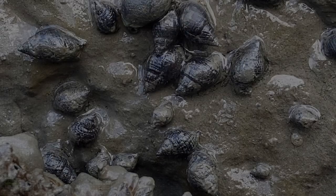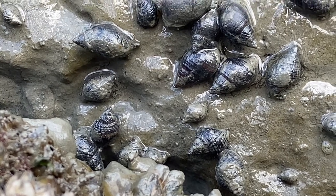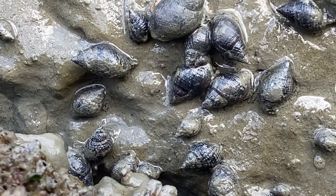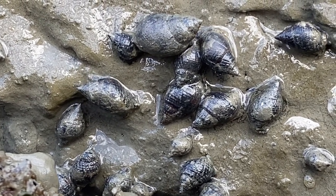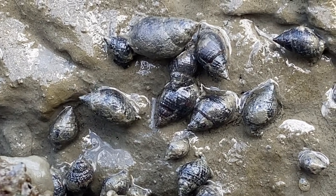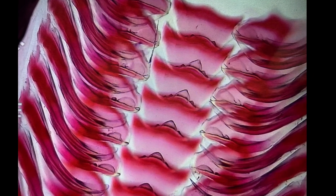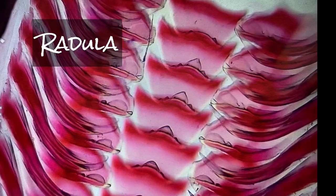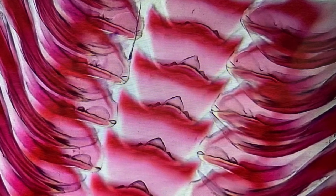Snails can eat a variety of things depending on the species. Some are herbivores and will eat algae or plants. Other snails are carnivores and will drill holes into other animals' shells to get to them. Both herbivores and carnivorous snails have a special tongue called a radula, which looks kind of like a file. They can use this to scrape up bits of plants, or in the case of carnivorous snails, drill a hole into shells to get to the animal inside.